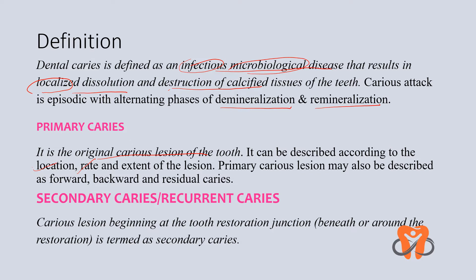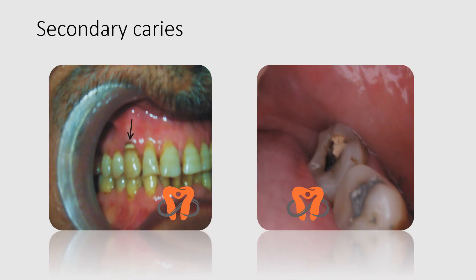Secondary caries is the caries lesion which begins at the restoration-tooth junction — it is present beneath or around the restoration. In the picture shown, you can see a caries lesion present below a restoration. In the second picture, there is a broken filling and you can see caries lesion present beneath it. These are all examples of secondary caries.